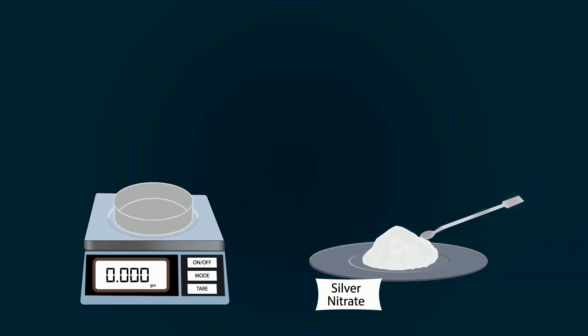Start adding silver nitrate with the help of spatula into the petri dish. You have to measure precisely up to 3.397 grams.